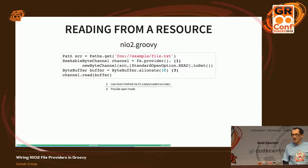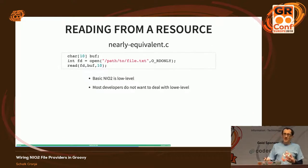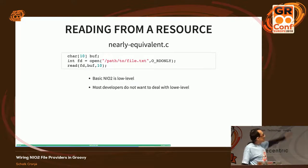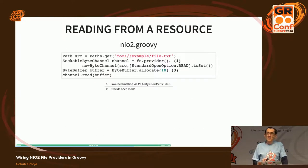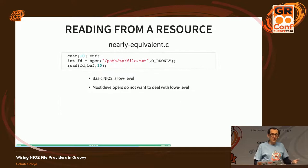Unfortunately, channels are a bit more low-level. You have to copy things in and out via byte buffers. You can also create streams over channels, which makes it a bit easier. To give you an example of the level: that's real old-school POSIX-style C code reading from a file, and NIO2 channels are at pretty much the same level — except even more verbose. That verbosity is one of the pains of working at this level.